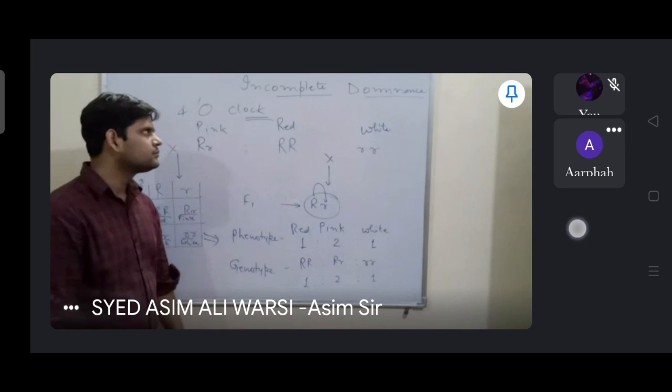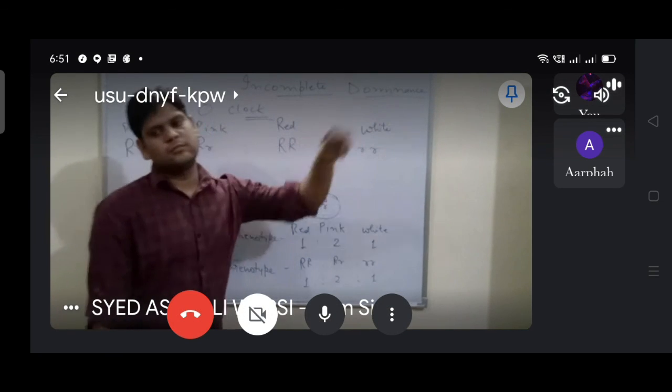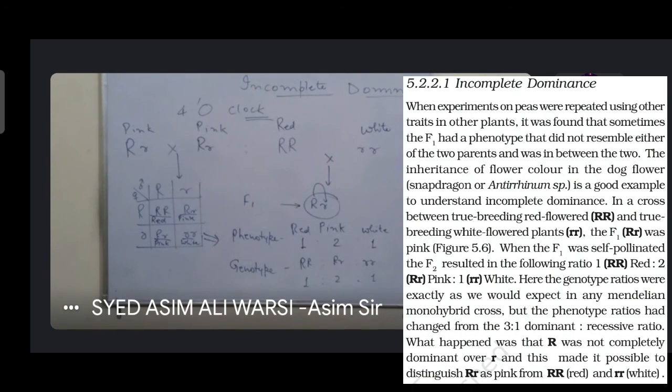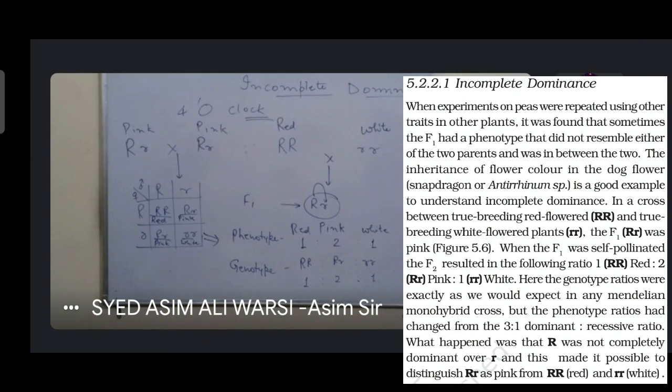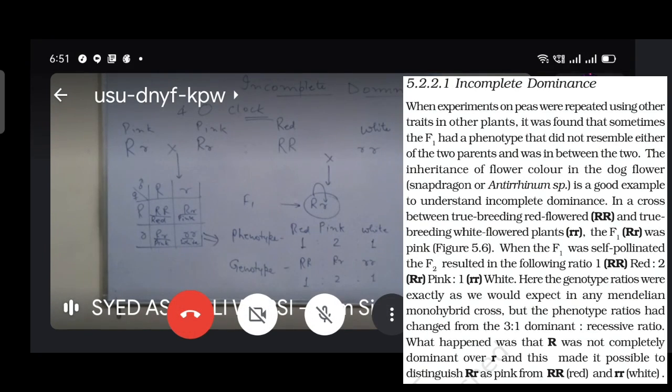How is the cross? Incomplete dominance. Did you understand? Have you given this in NCERT? It is a snapdragon plant, right? That is the Antirrhinum majus, dog flower, or snapdragon. It is the name of this.